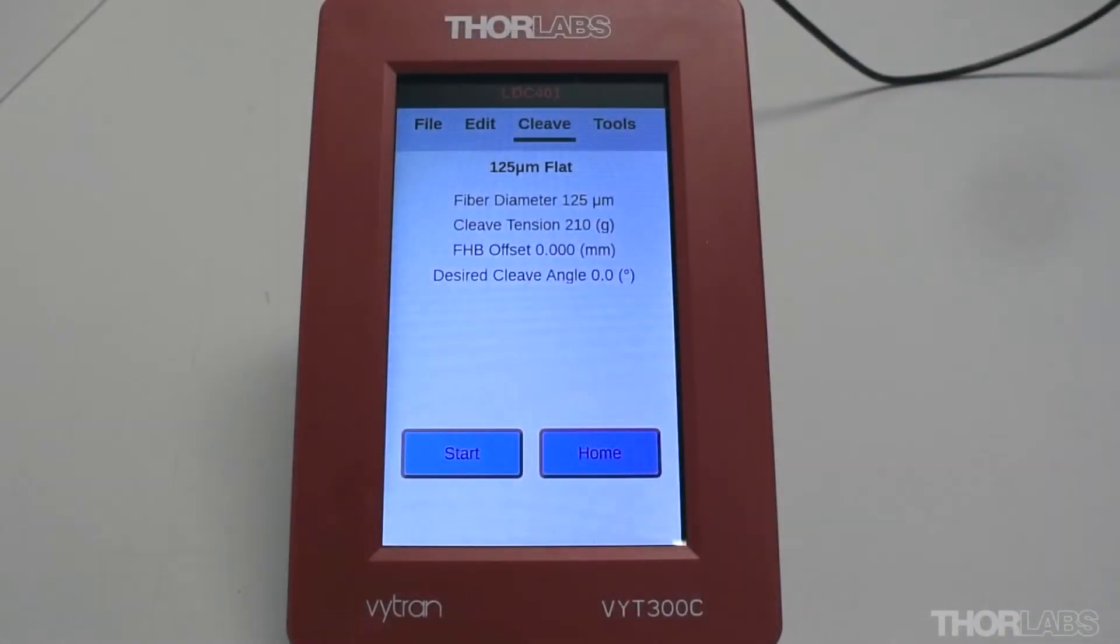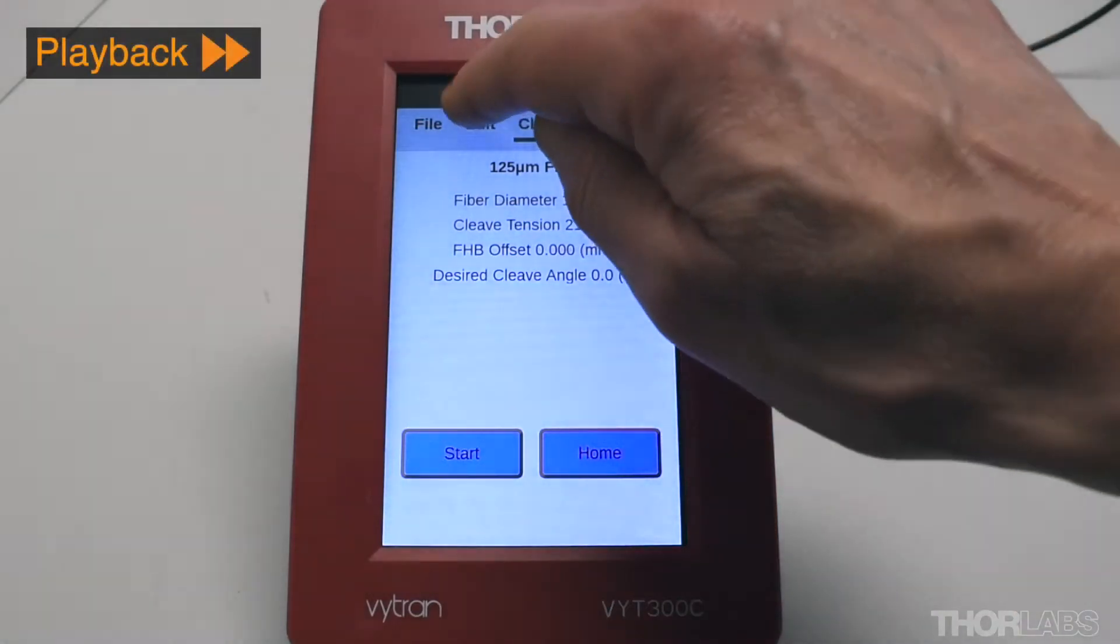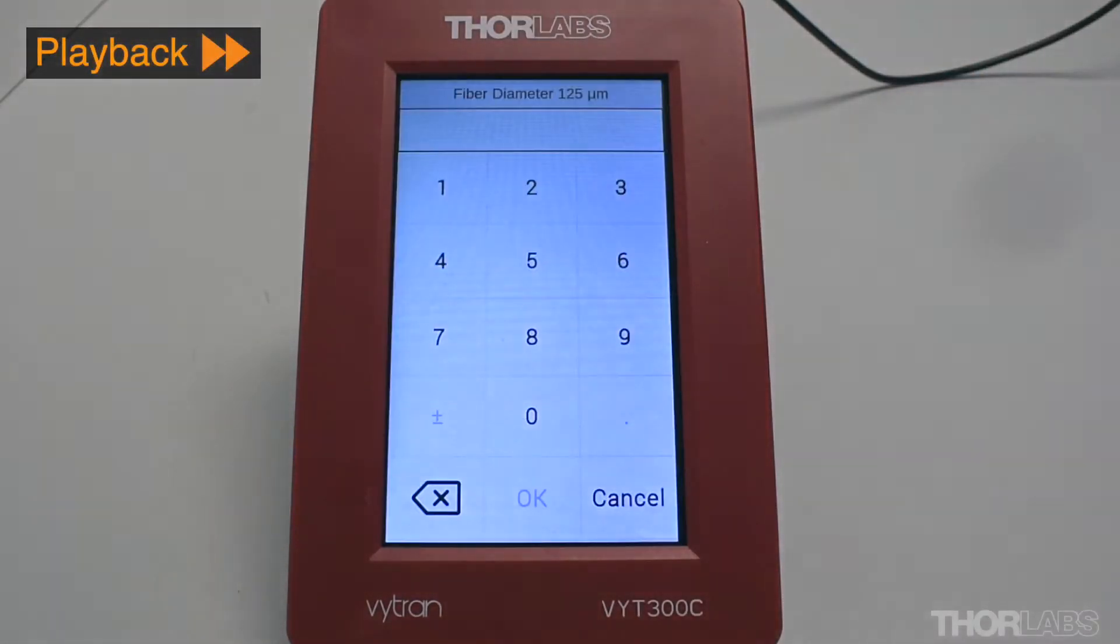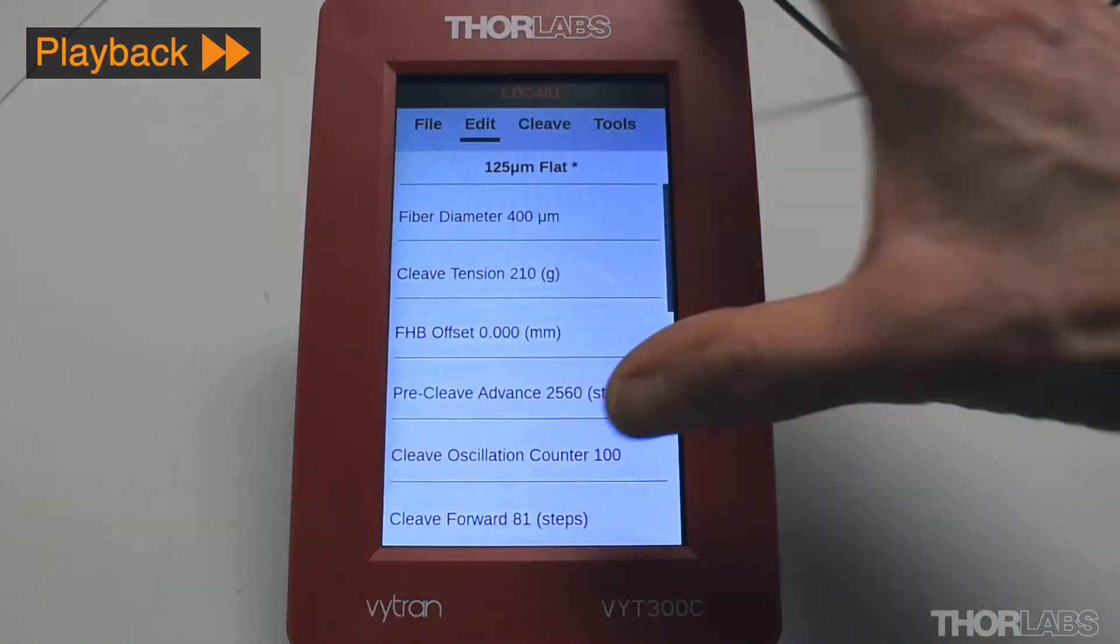If you are performing the angled cleave for the first time, it will be necessary for you to use the handset controller to set up a new file. Input the fiber diameter and clamping distance.